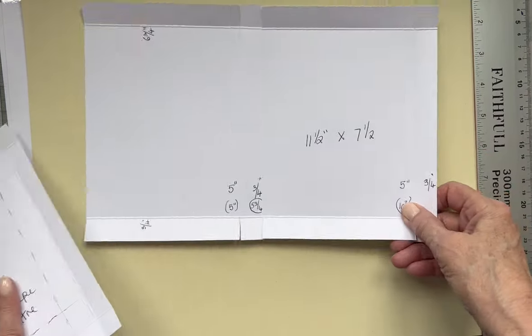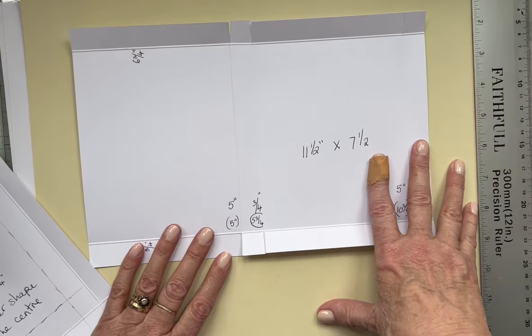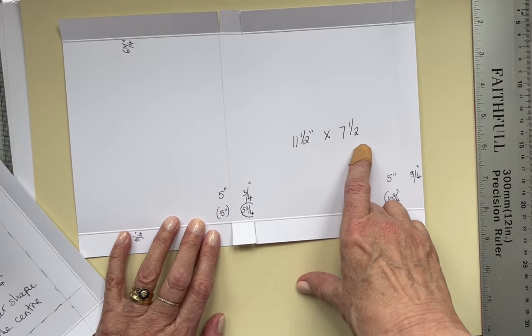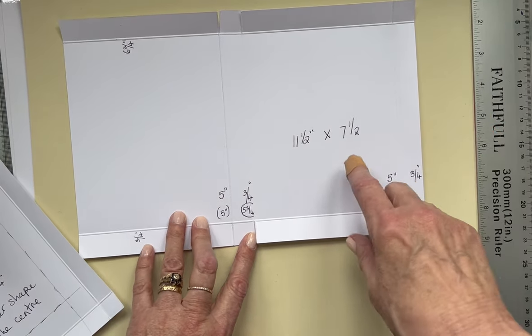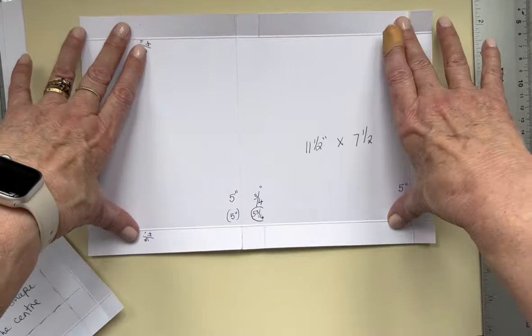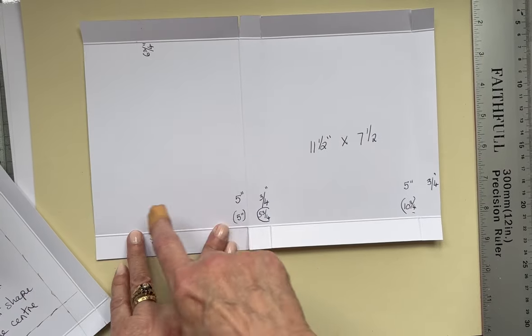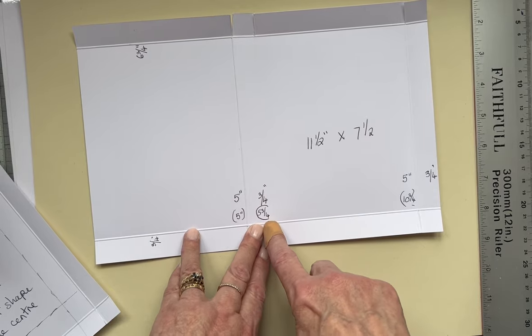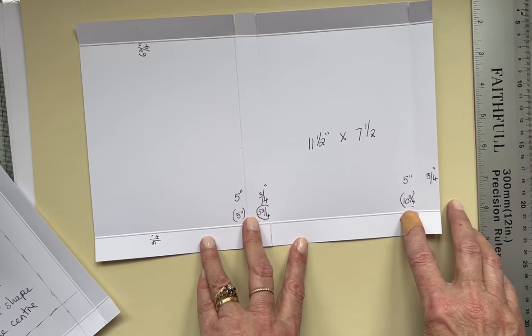This is what you need - two basic pieces of card. You need one 11 and a half inches by seven and a half inches. You score this one at five inches, then at five and three quarters, then at ten and three quarters.